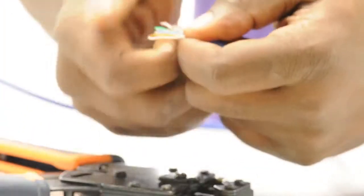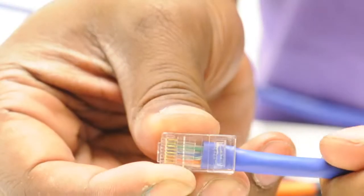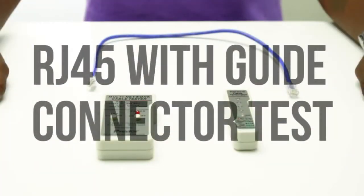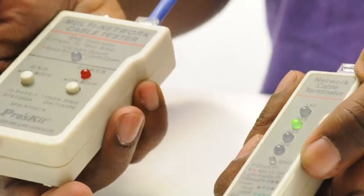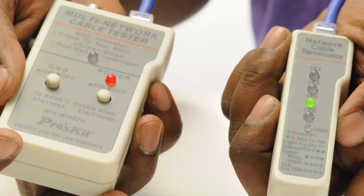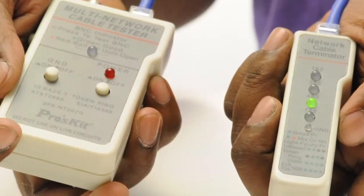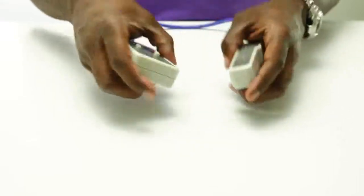Repeat all of the steps mentioned on the other end of the cable. The final step is to test the cable. Insert the RJ45 connectors into the tester. As you can see from the green lights, this cable has been properly terminated, connected, and will function correctly.